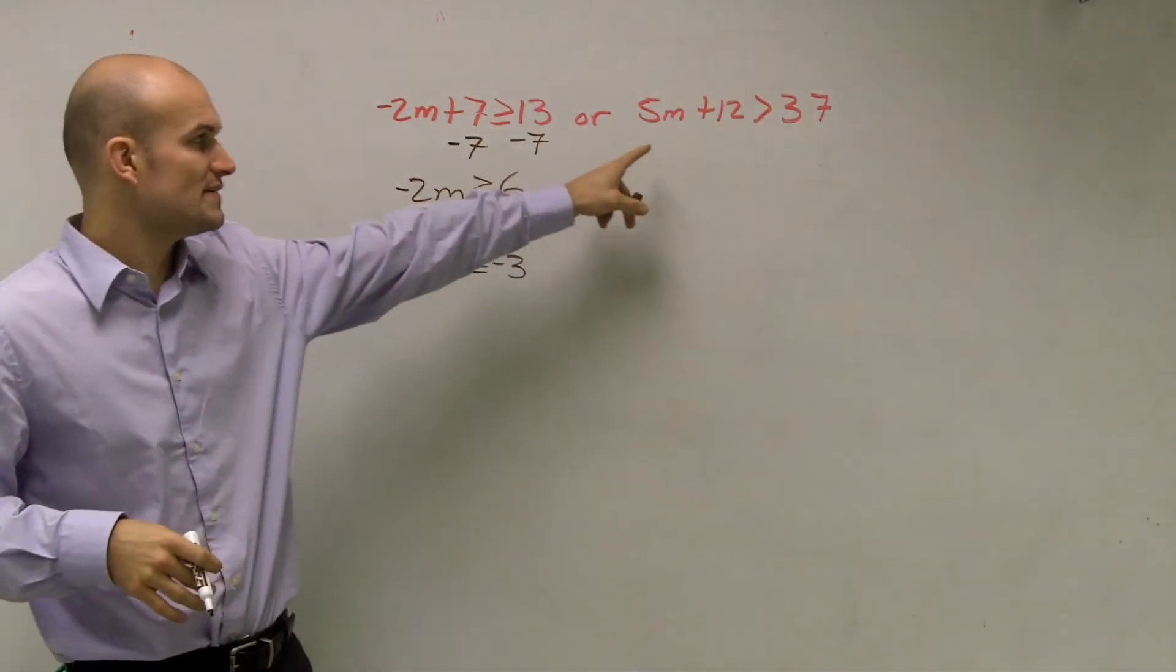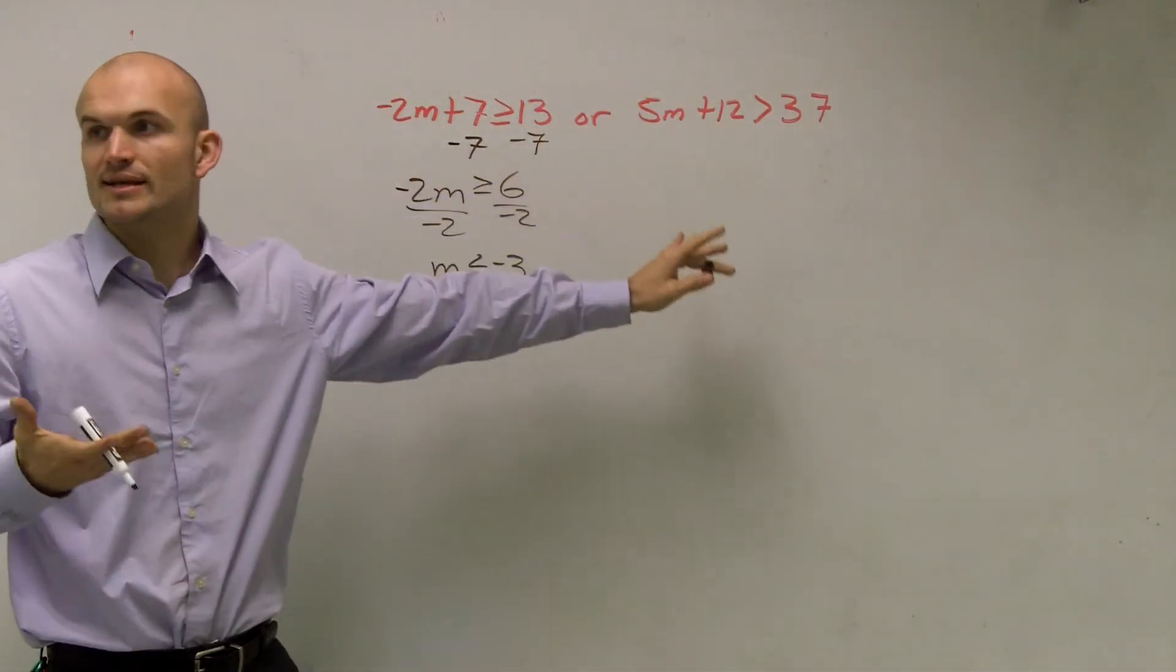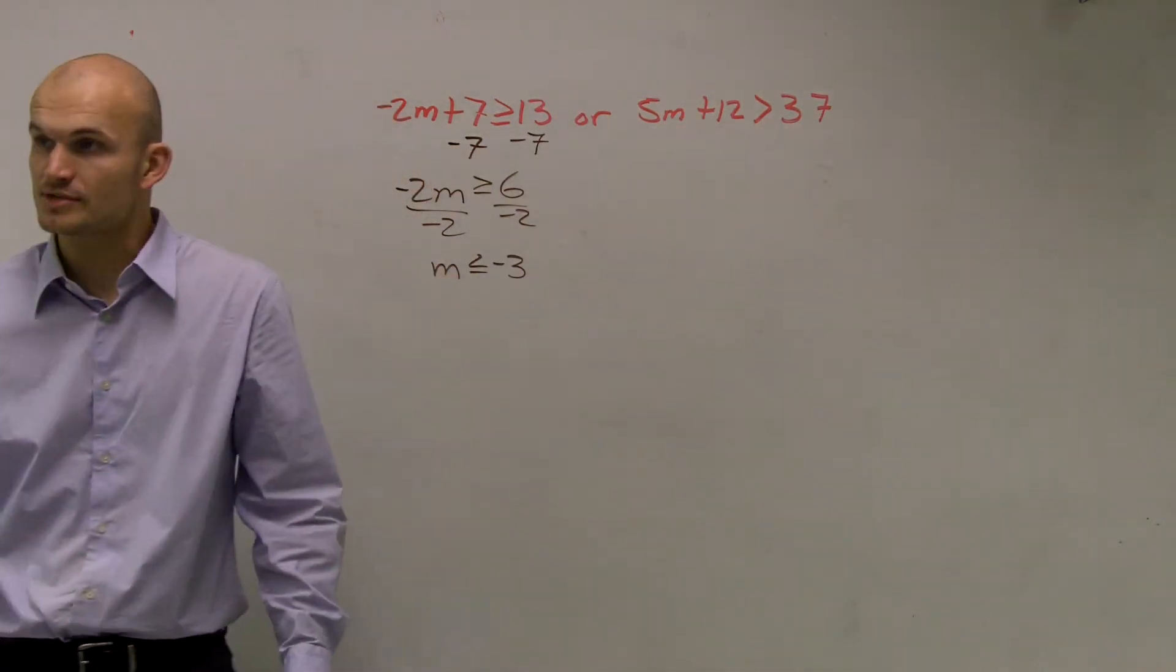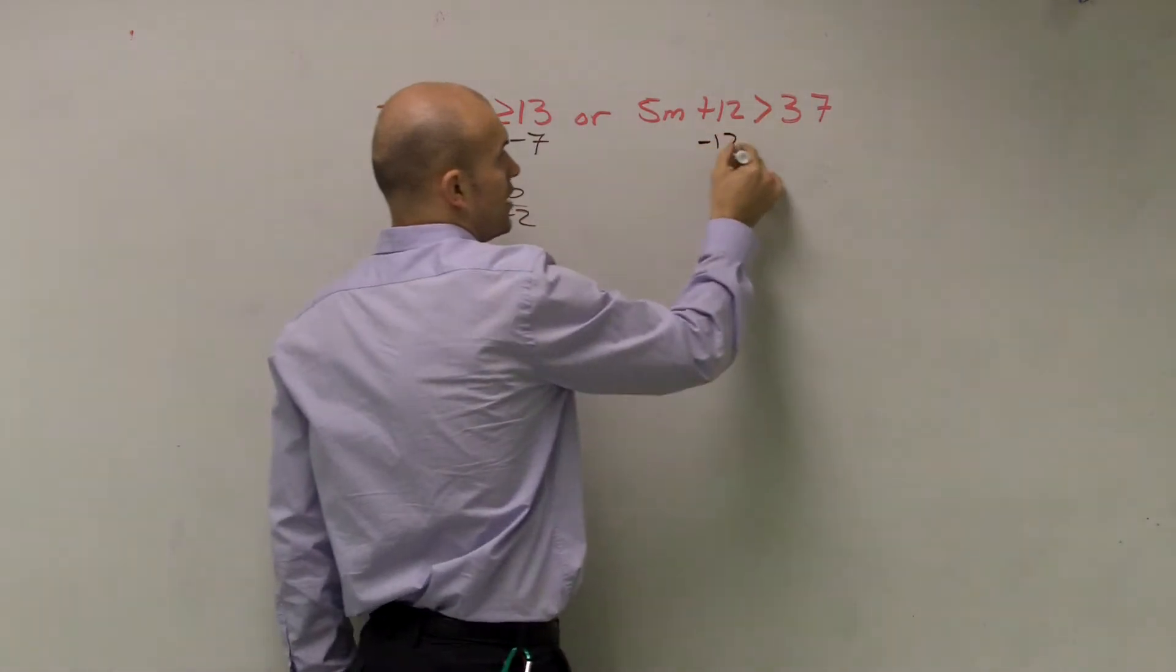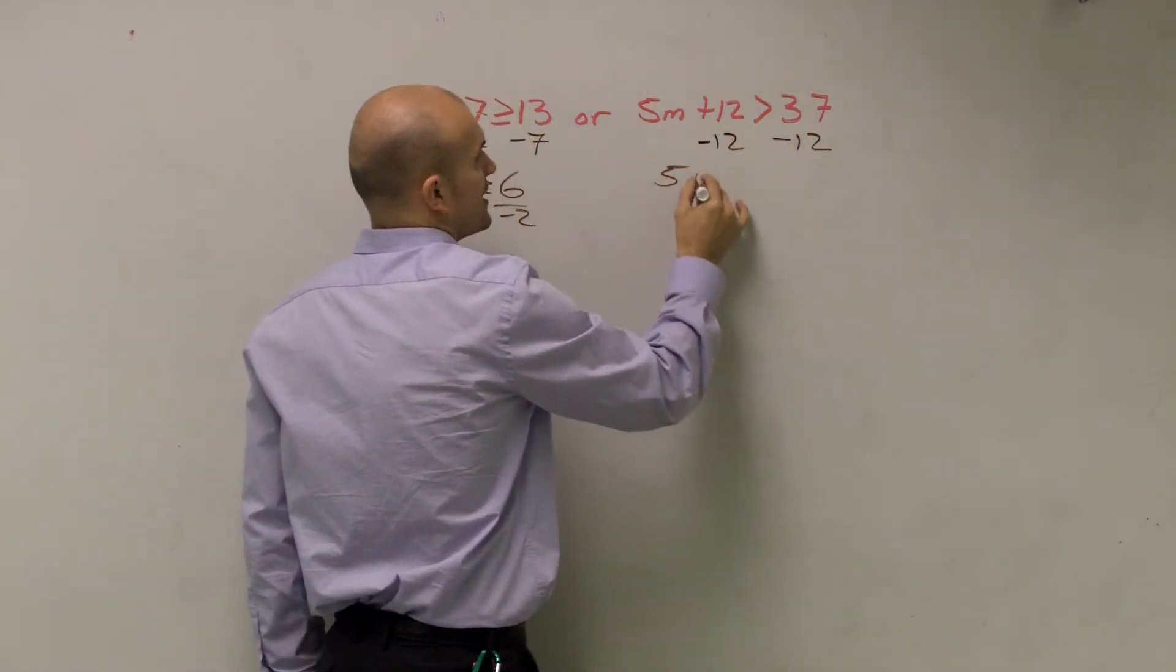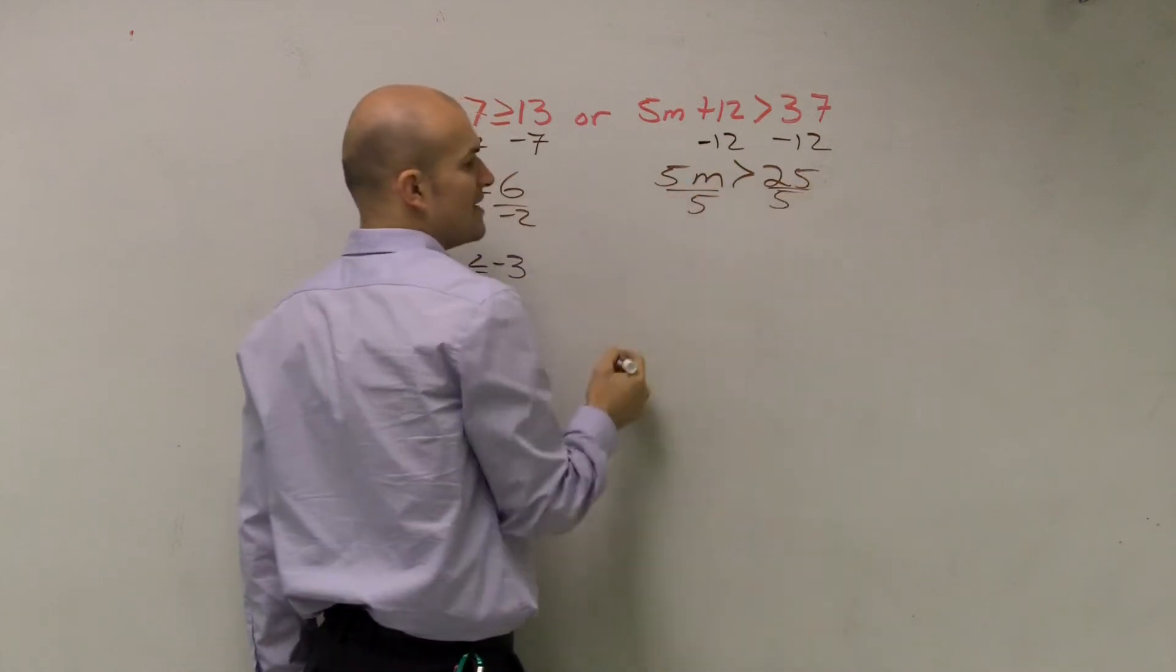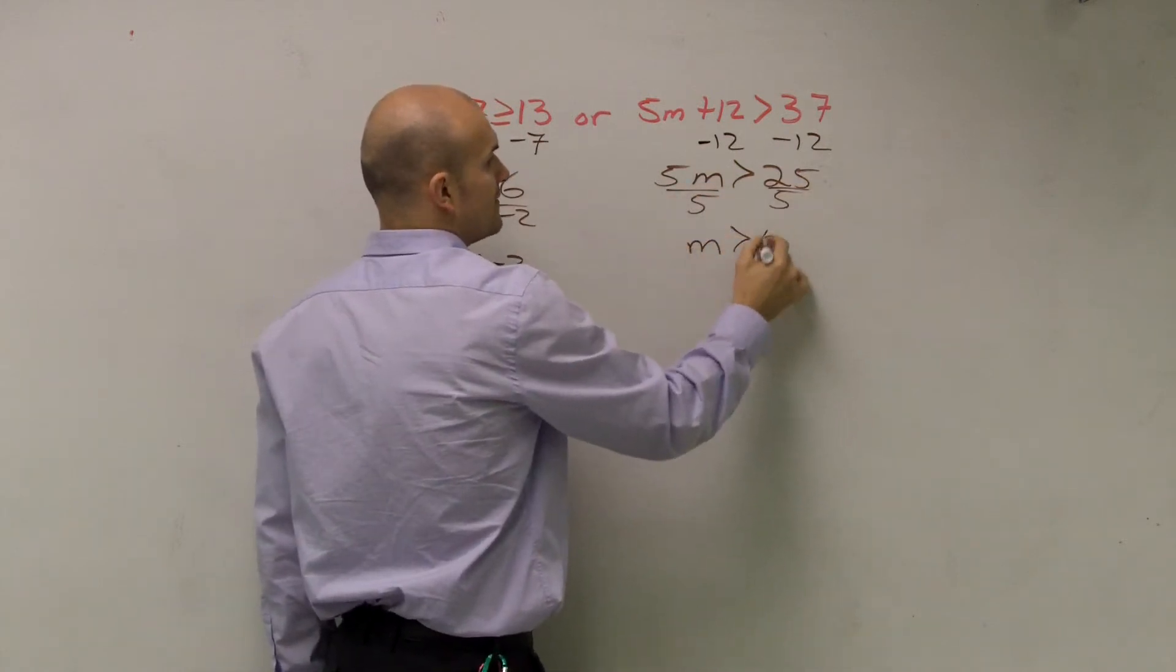Next, let's go ahead and solve this inequality. Remember, it's just like an equation. Use the same properties of inequality. First thing we need to do is undo addition and subtraction. So I'm going to subtract 12 on both sides. I get 5m is greater than 25, divided by 5, m is greater than 5.